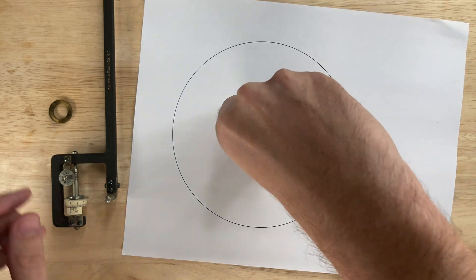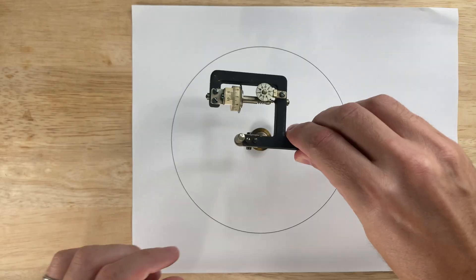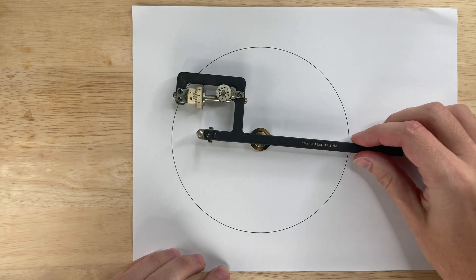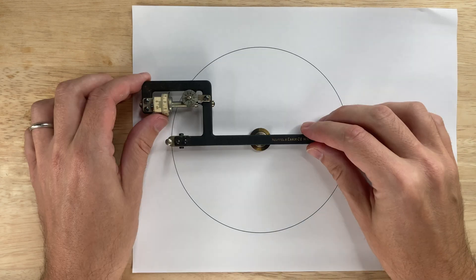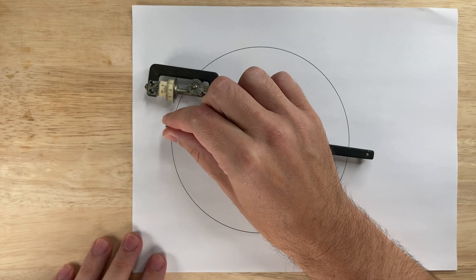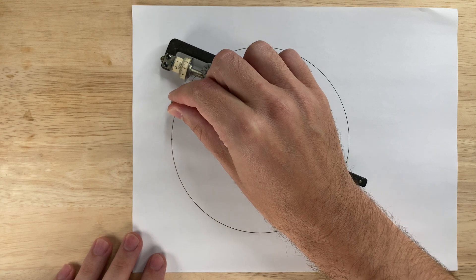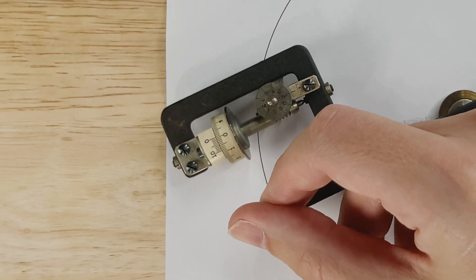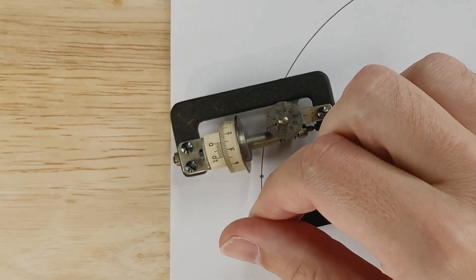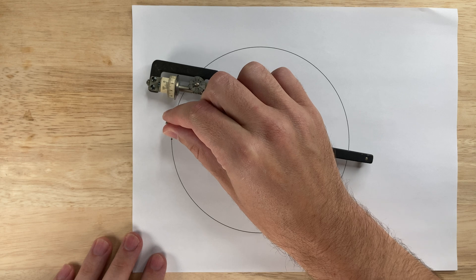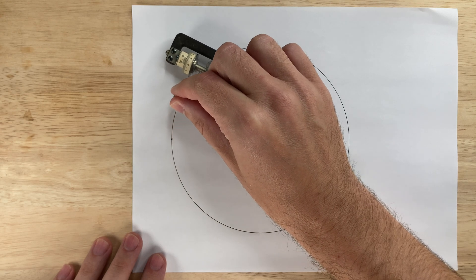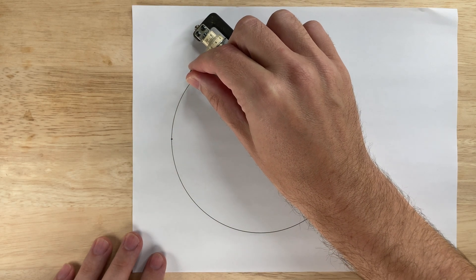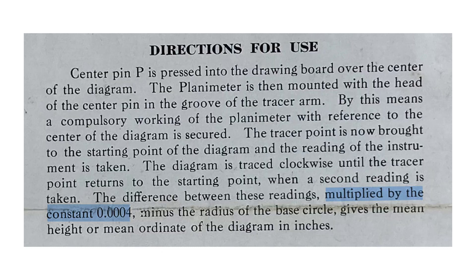Basically you use this thing to measure the radius of a circle. See if I have a perfect circle and I put the center in the middle here. Then as I go around the wheel is just rolling out the distance around the circumference of the circle. The units are a little weird though. The wheel here measures 10 going all the way around. But that's not actually 10 inches or centimeters or anything. It's just marked to 10 units.